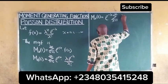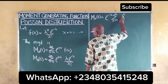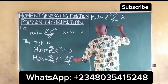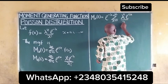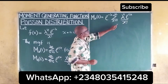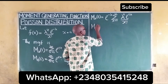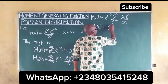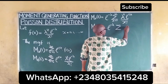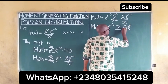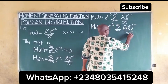We'll combine this to give us our moment generating function as the summation of (lambda * e^t) raised to the power of x, as x runs from 0 to infinity, all over x factorial.